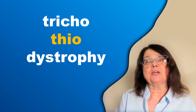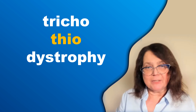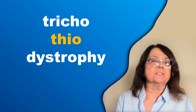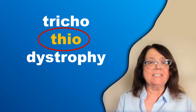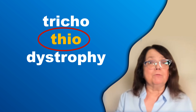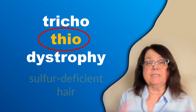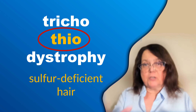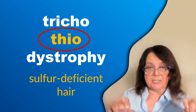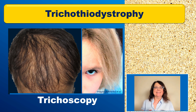In the term Trichothiodystrophy, the part 'Tio' means sulfur, and it refers to sulfur-deficient hair, which is believed to be the pathogenic cause behind the increased hair shaft fragility.